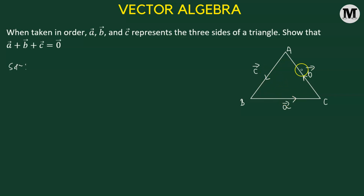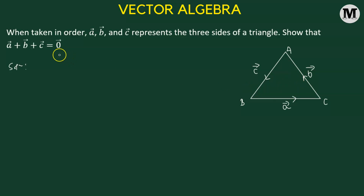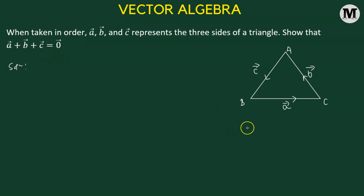This is what it means when we say that vectors a, b, and c are taken in order — they are going in a cyclical fashion. Now, in order to show that vector a plus b plus c equals zero, we'll use the triangle law of vector addition.